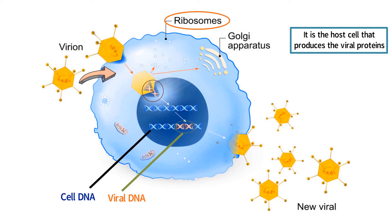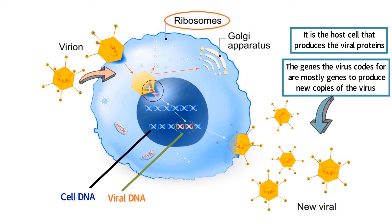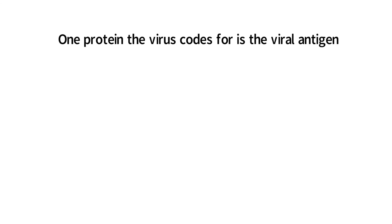When the genes of the virus are expressed, it is the host cell that produces the mRNA of the viral gene, and it is the host cell's ribosomes and amino acids that build the proteins of the virus. The genes the virus codes for are mostly genes to produce new copies of the virus. Thus, after infecting a host cell, the virus is able to produce more copies of itself — including the DNA or RNA and the protein shell. This process repeats, producing more and more copies of the virus until the cell ruptures and dies. However, one protein the virus codes for is the viral antigen.